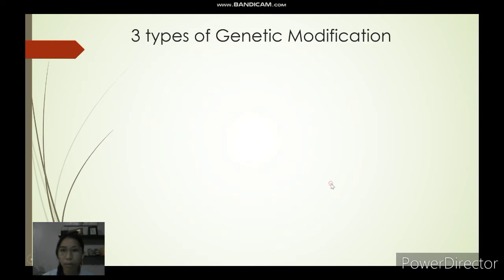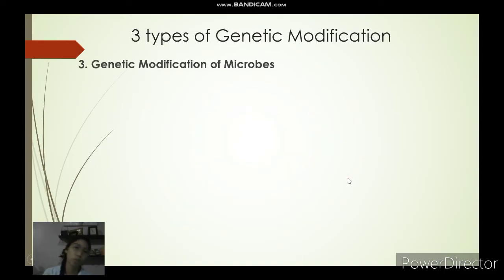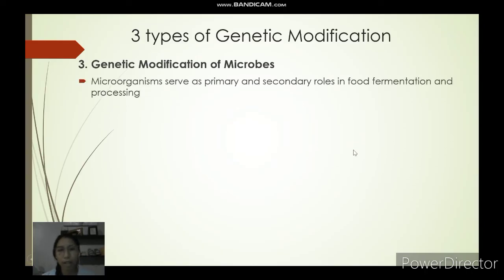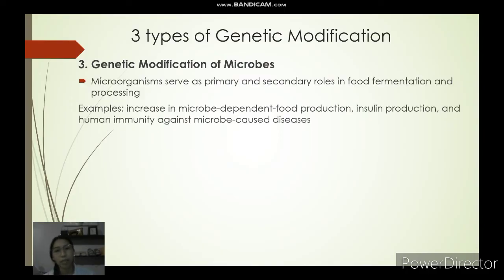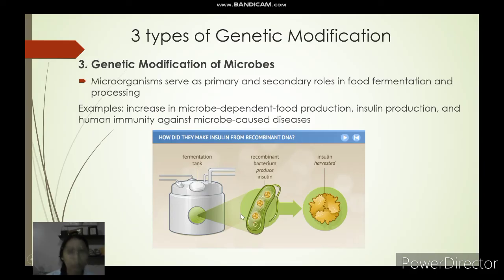The last type is genetic modification of microbes. Microorganisms serve as primary and secondary roles in food fermentation and processing — such as in making wines, kimchi, and cheese. Examples of microbial modification include increased microbe-dependent food production, insulin production as discussed earlier, and human immunity against microbe-caused diseases.